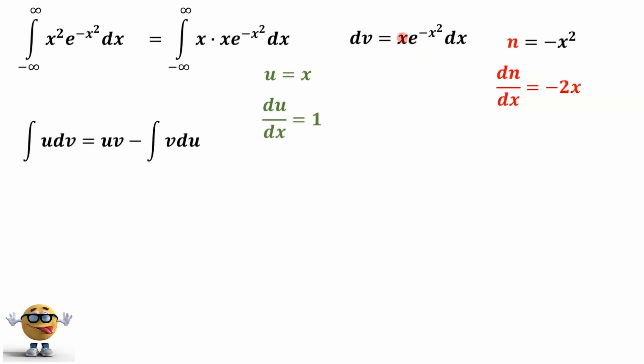Now you can see why we had this x here, because x times dx is equal to dn over negative 2. If we rearrange this equation, multiply both sides by dx, divide by negative 2, we get dn over negative 2 is equal to x dx, and we can substitute this in for x dx.